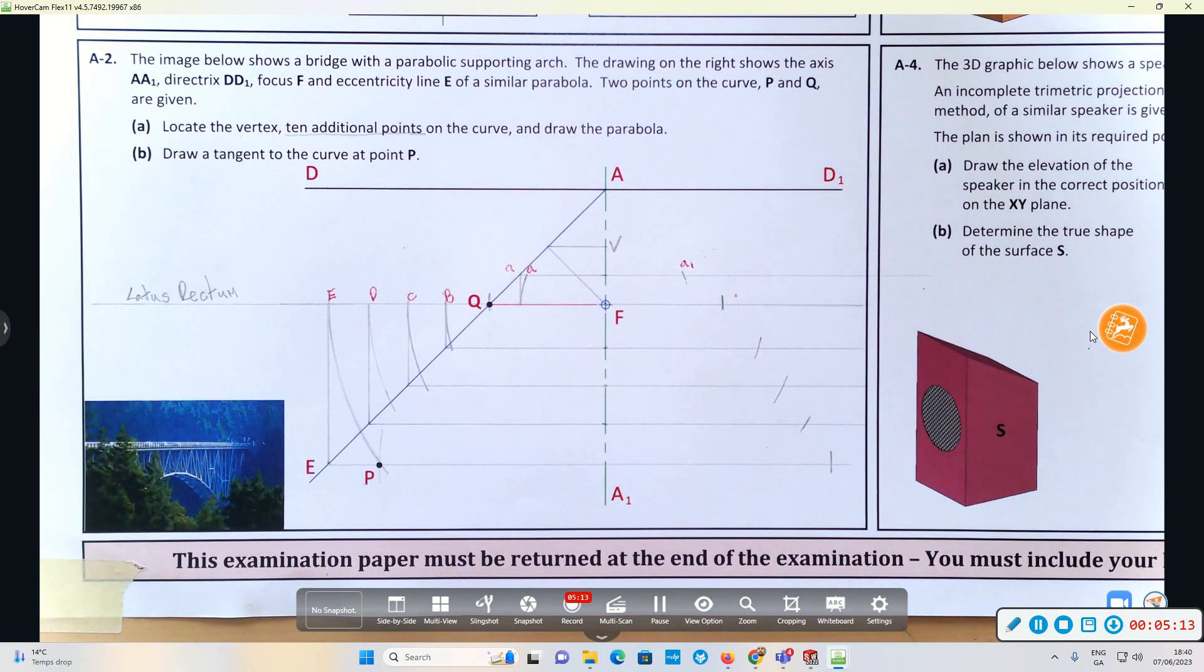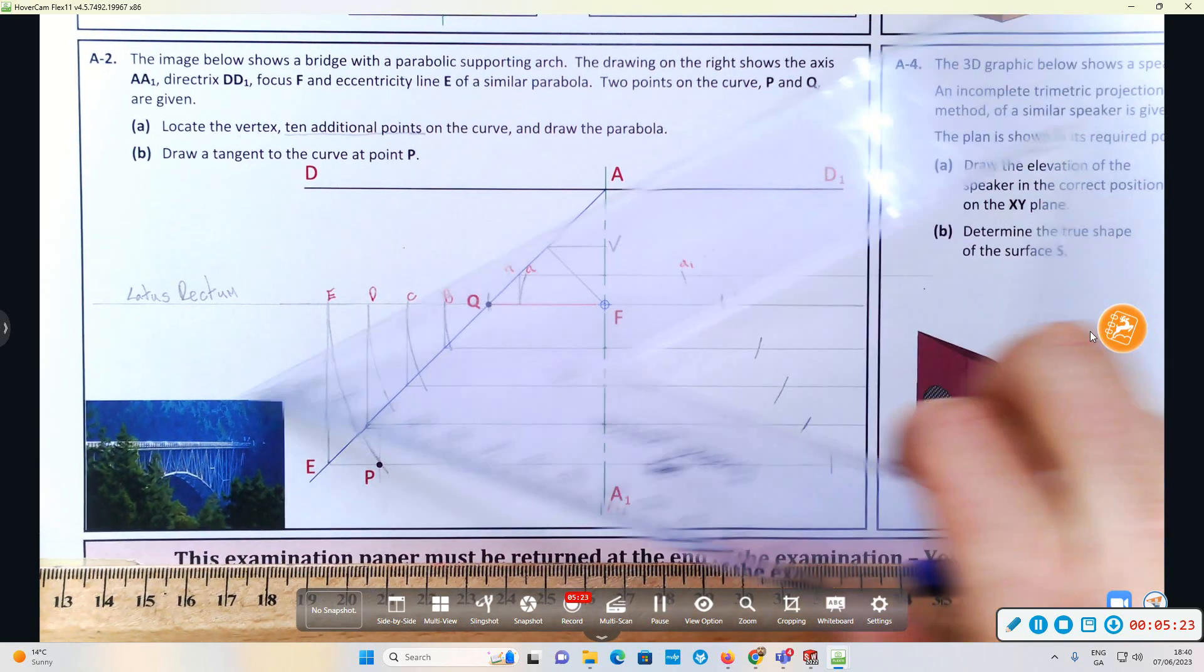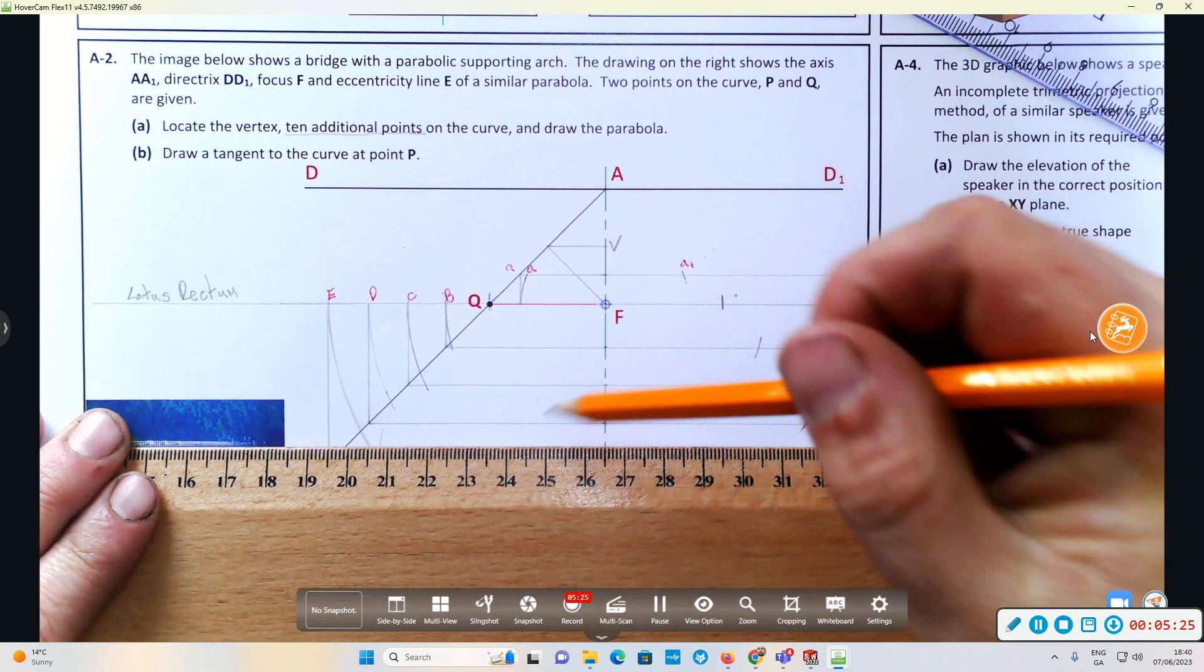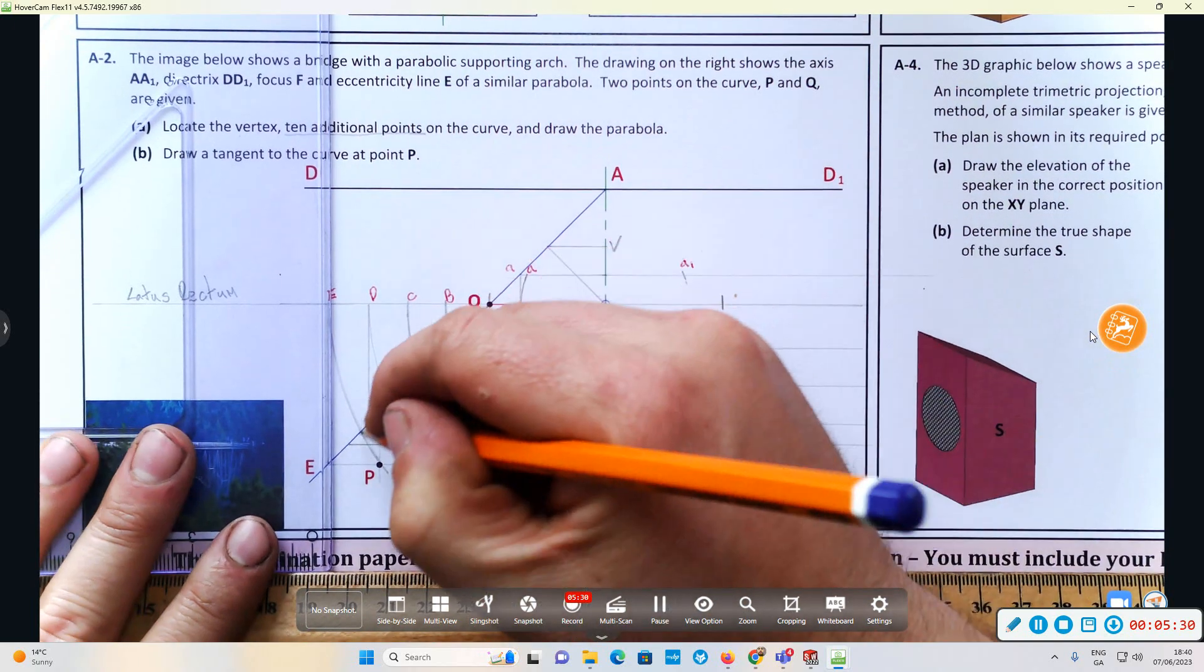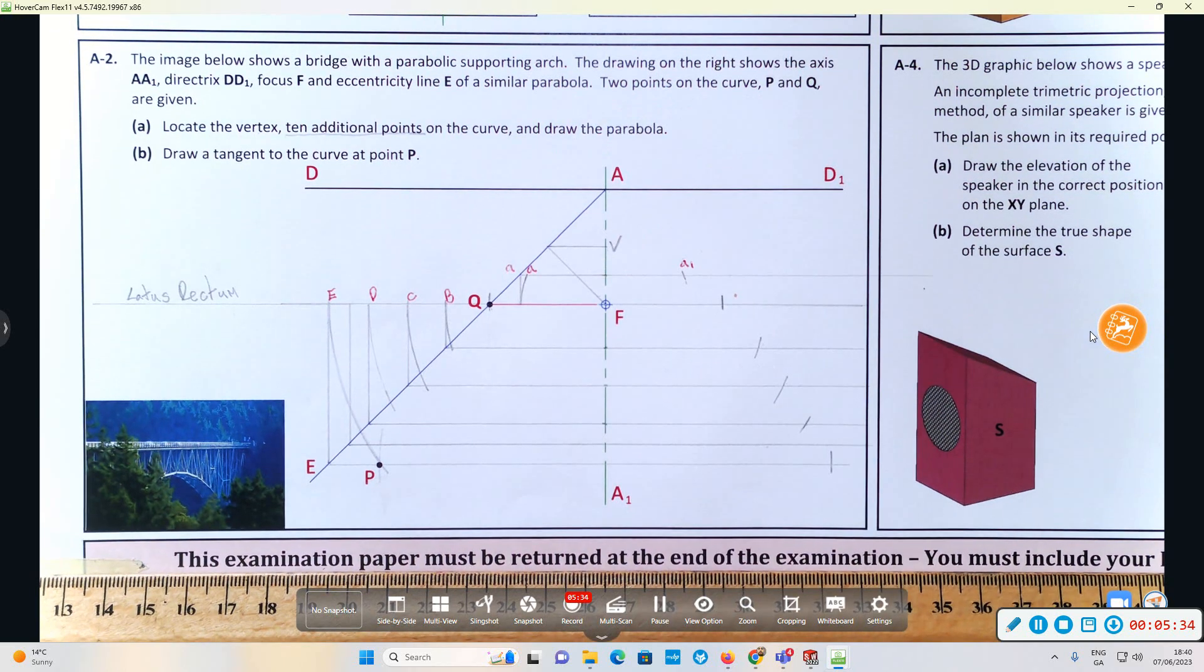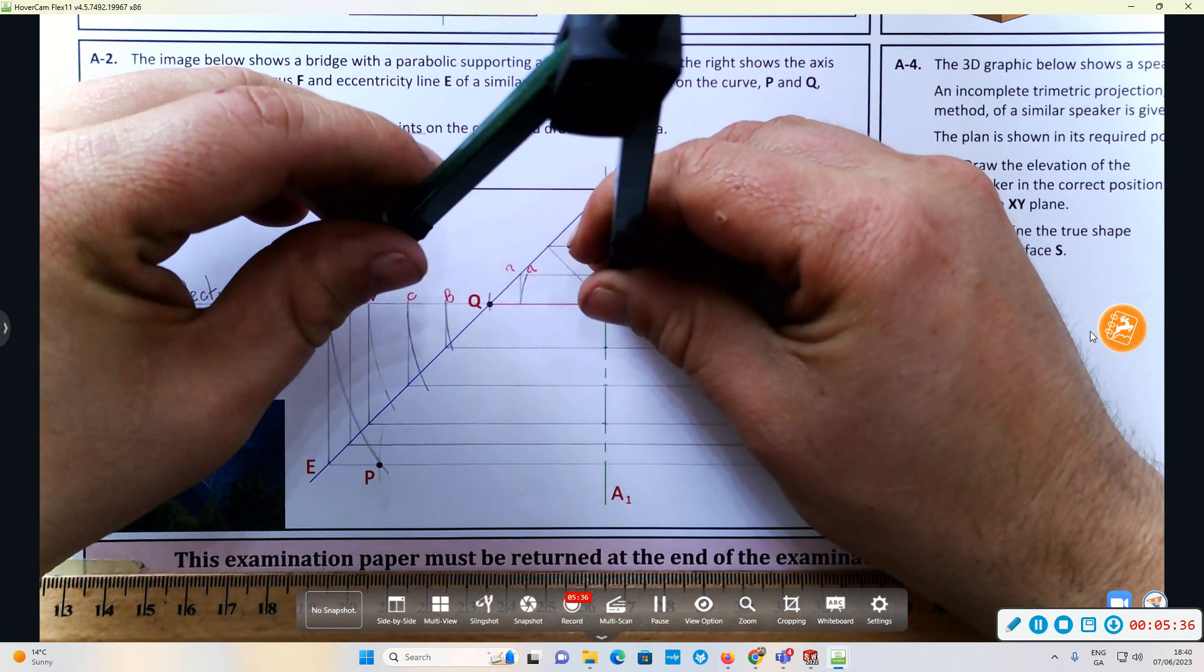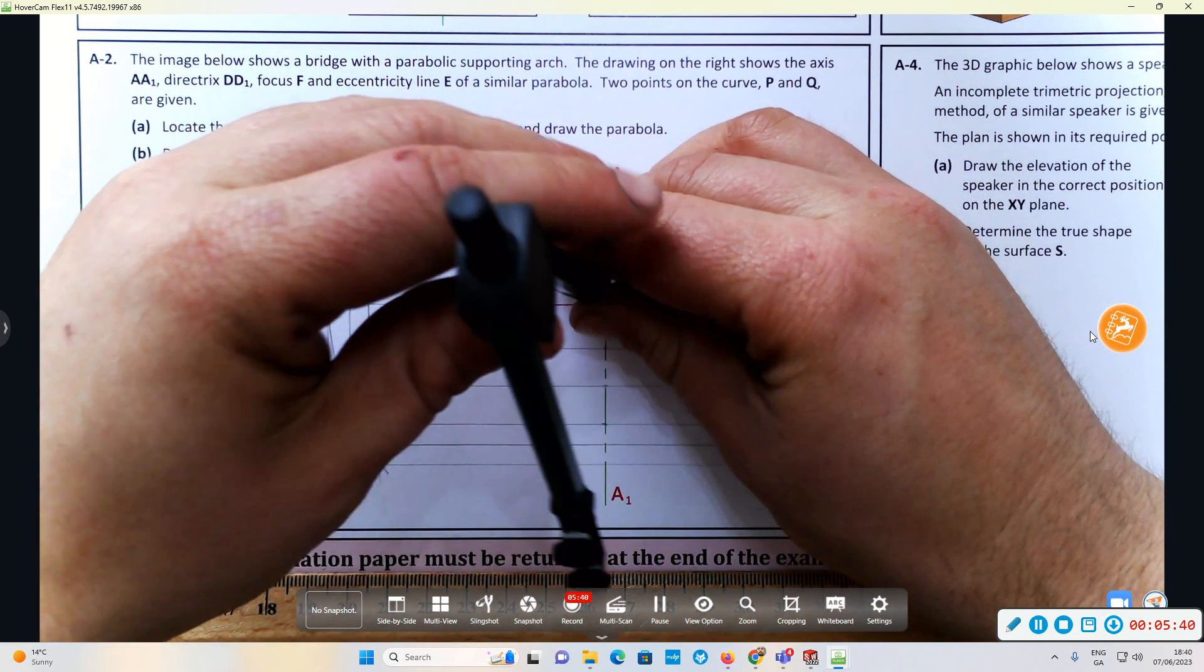So I have one, two, three, four. I've done four additional points there, so I want to do just one more. It doesn't matter the distance between them. Let's do one here.